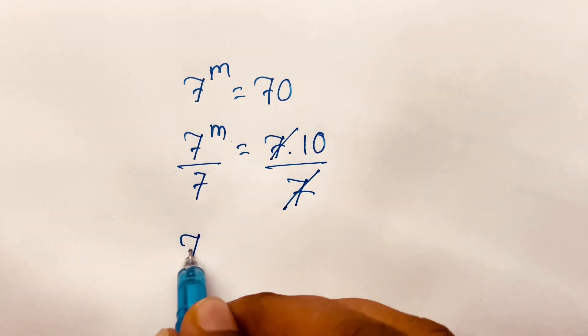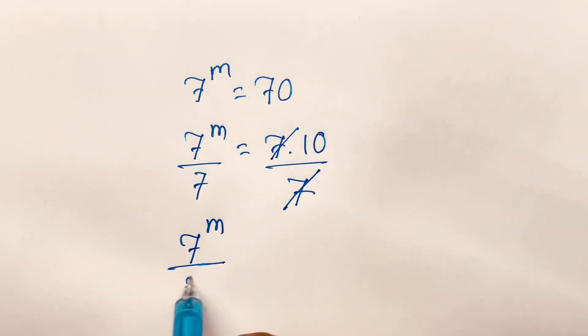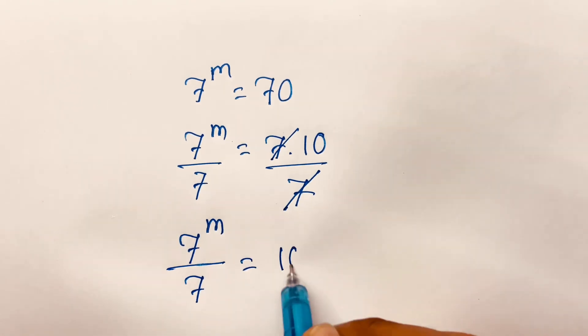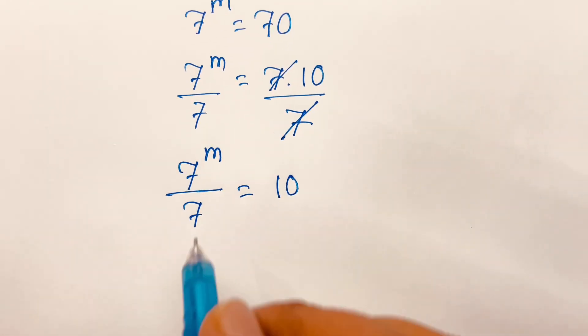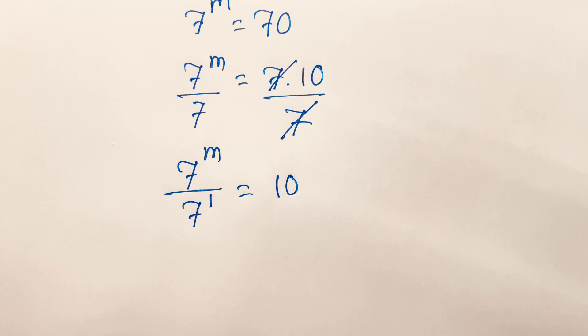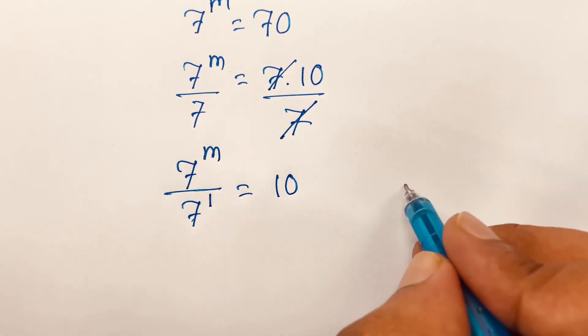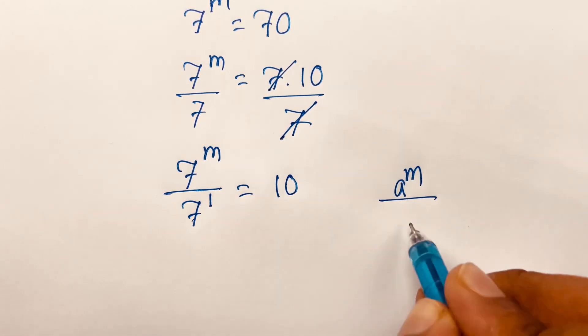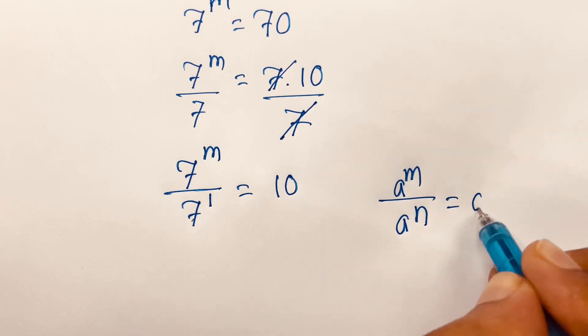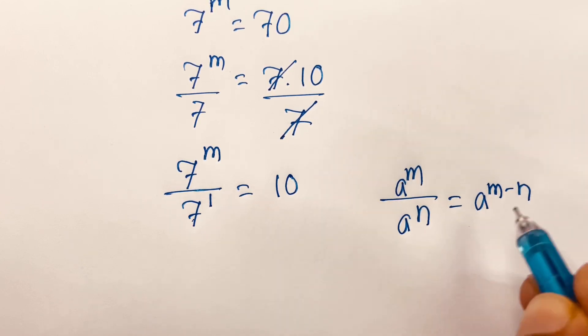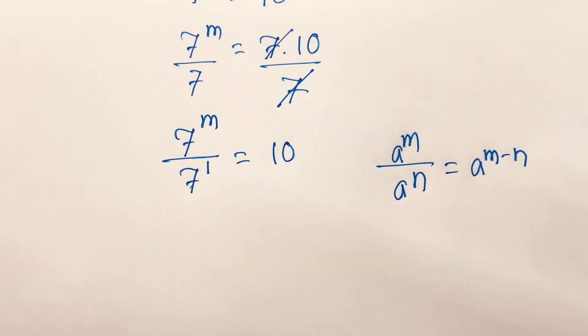We'll find 7^m/7 = 10. I can say this exponent is 1, and basically the same. We know that a^m/a^n = a^(m-n). According to this rule, I can say 7^(m-1) = 10.